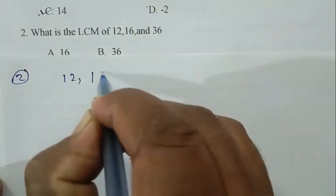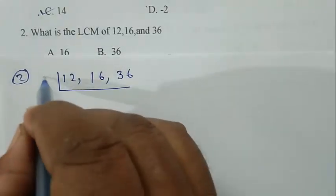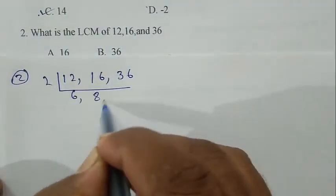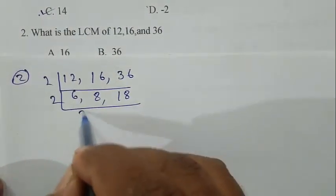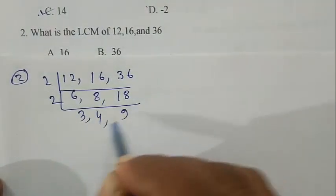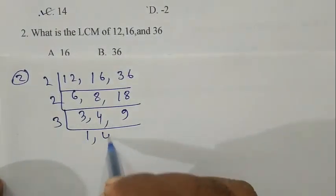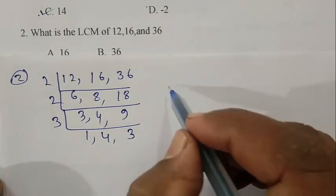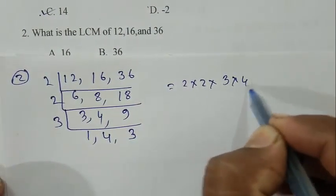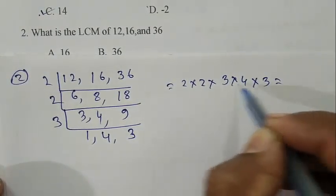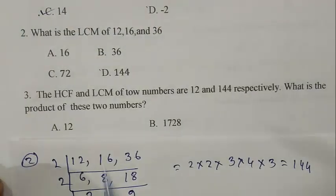First two, that is 6, 8, 18. Then 2, 3, 4, 9. Then 3, that is 1, 4, 3. This is 2 into 2 into 2 into 3 into 4 into 3, that is 144. So D is the right answer.